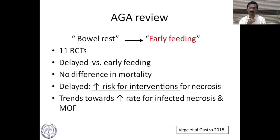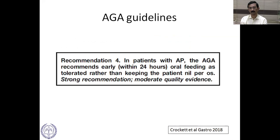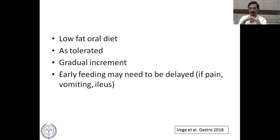For nutritional support, the initial concept was bowel rest to rest the pancreas, but the current approach favors early feeding. Comparing early versus delayed feeding, there is no difference in mortality, but delayed feeding is associated with increased risk for interventions for necrosis, trends for infected necrosis, and multi-organ failure. Guidelines recommend oral feeding as tolerated, keeping the patient nil per os for as little as 24 hours — a low-fat oral diet with gradual increment. Early feeding may need to be delayed if there is pain, vomiting, or ileus.